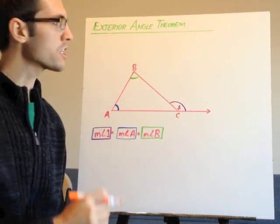So if we take 180 and chop off this angle here, we're left with these two angles, which should be the same measure of this third angle, angle 1. The exterior angle theorem states that the measure of angle 1, this exterior angle, is equal to the measure of angle A plus the measure of angle B, these two opposite interior angles.